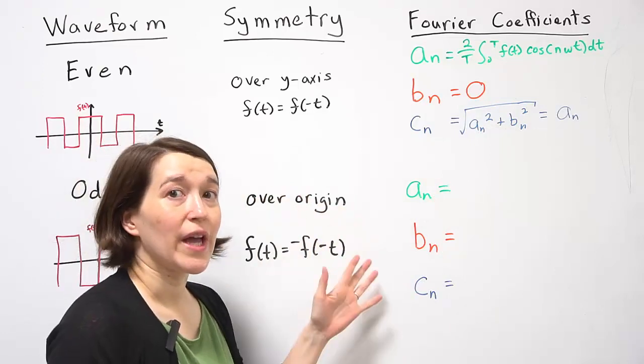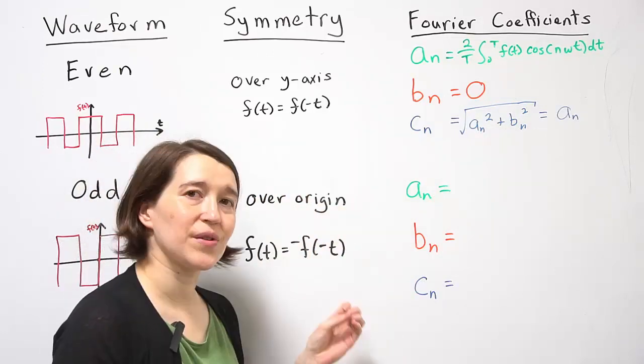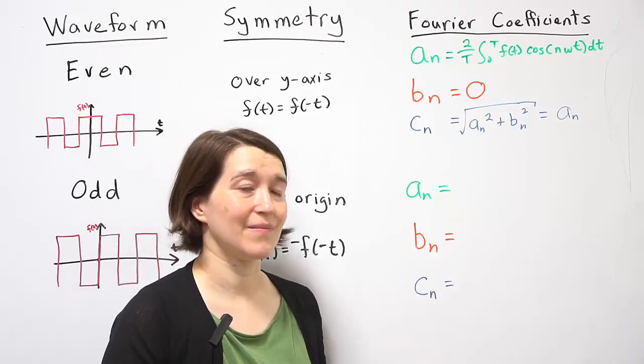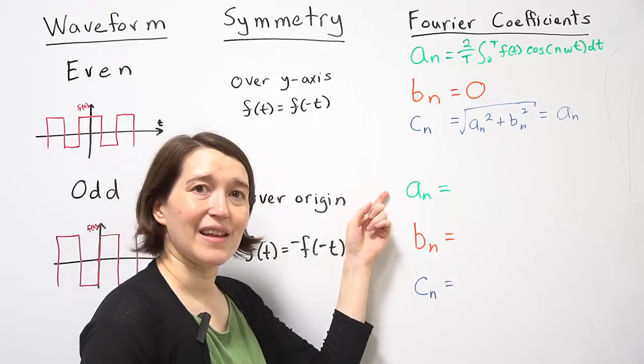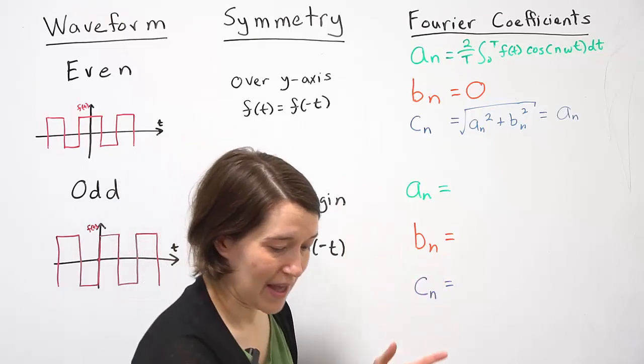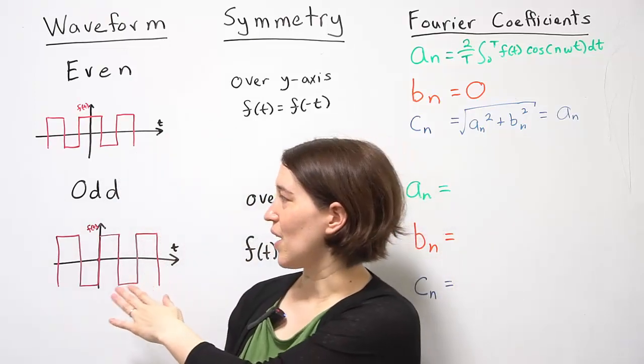When we're finding the Fourier coefficients, we are also going to see some simplifications. An is based on the cosine.